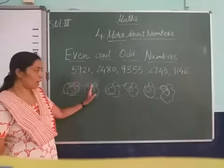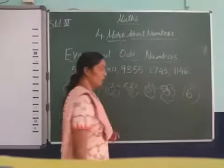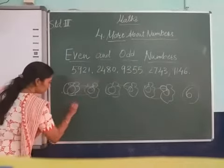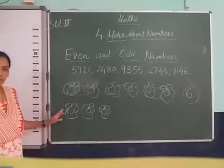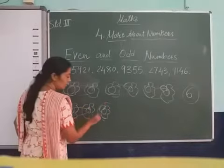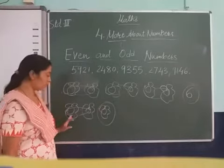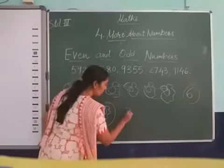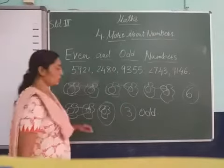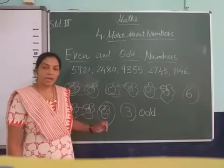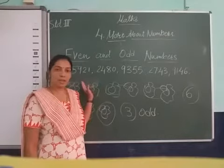How many flowers? 1, 2, 3, 4, 5, 6 — so 6 is an even number. If I have 3 flowers, let me see — can they make a pair? No. One is left over; this flower has no pair. So 3 flowers means 3 is an odd number. Those numbers that do not make a pair are odd numbers, and those that make a perfect pair are even numbers.